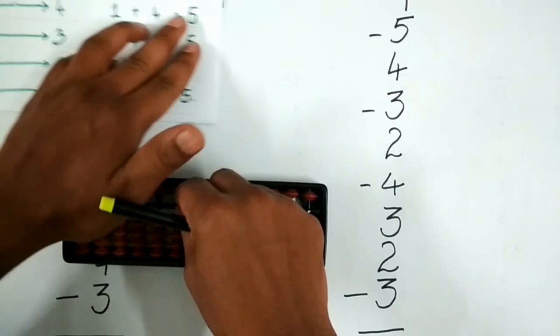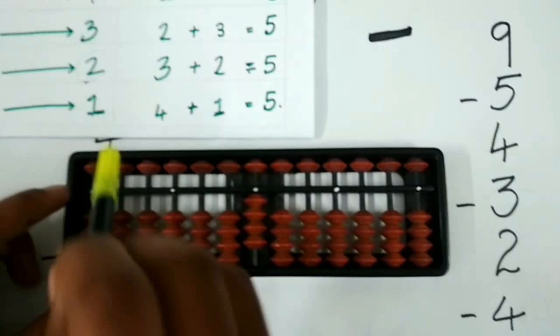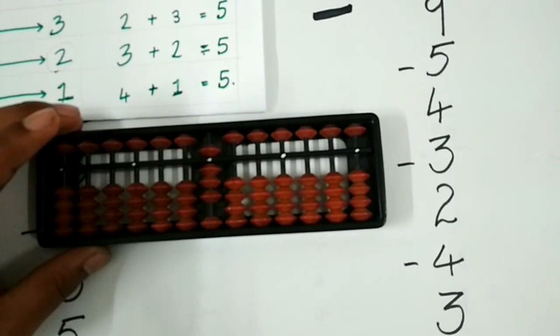We have 9 as the first number. To subtract 5, 5 can be subtracted directly. And to add 4, let us check who the friend of 4 is. 4's friend is 1. So add 5 and remove 1.